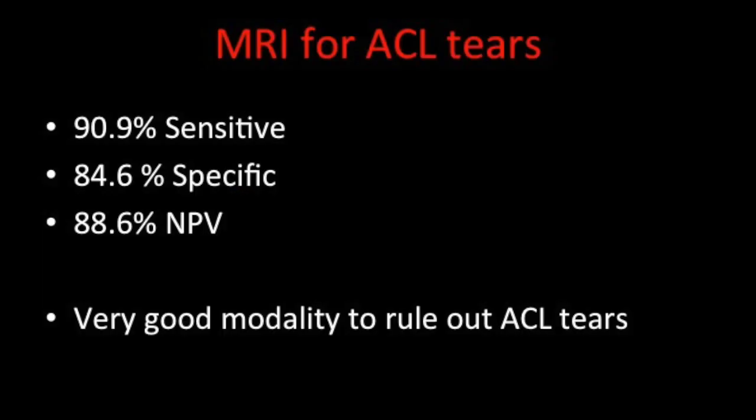To conclude, MRI for ACL tears has 90.9% sensitivity and 84.6% specificity, indicating it is a very good modality to rule out ACL tears. Radiologists can give a clear depiction of the ACL tear characteristics and chronicity. It is important to remember that ACL tear is a clinical diagnosis — what the orthopedic surgeon wants from the radiologist is to confirm or document the tear, give an idea about its chronicity, and look for associated injuries such as meniscal tears and medial collateral ligament tears, thus giving a clear picture of the internal derangement of the knee.